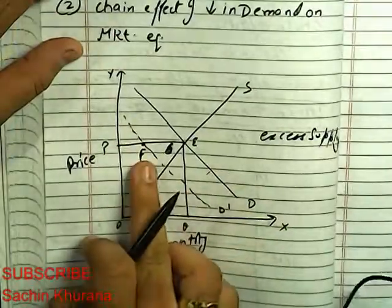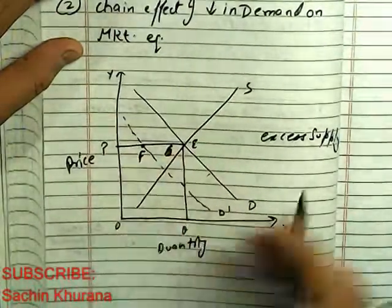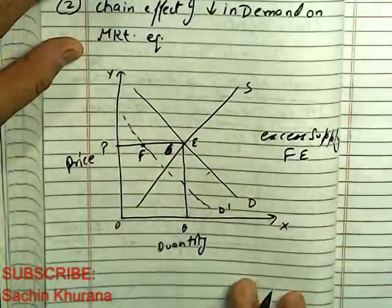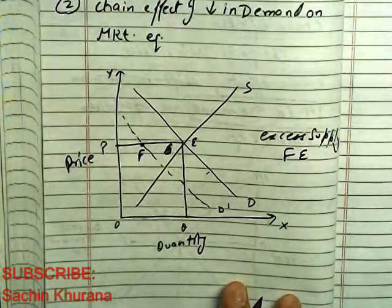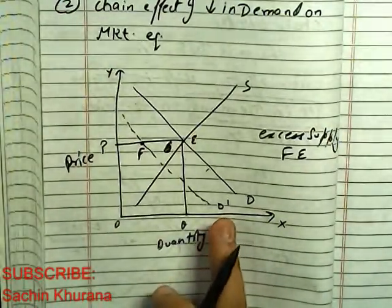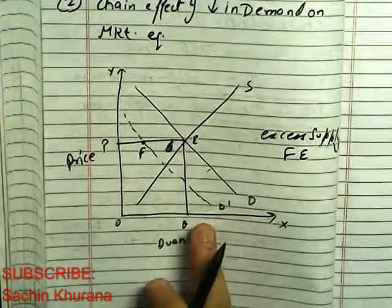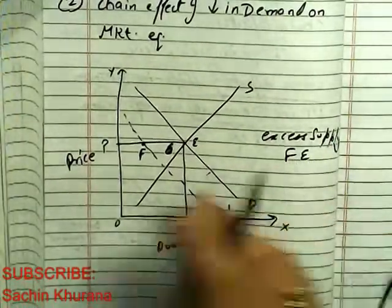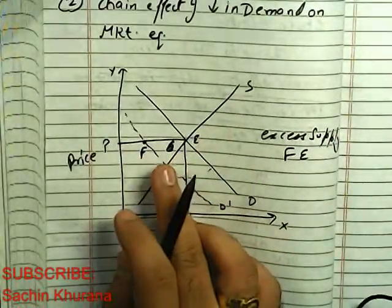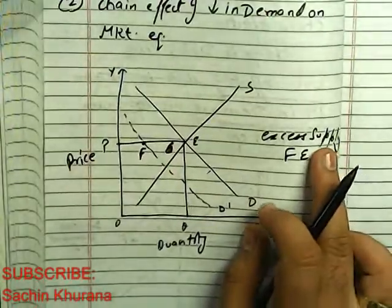excess supply. So demand here and supply here, F and E, so excess supply will be FE. But remember, as you draw the diagram, proceed step by step. You have to make observations. FE - this is a case of excess supply.